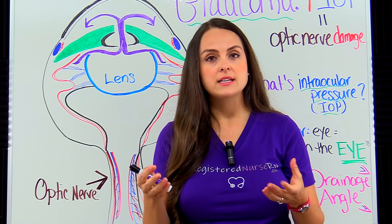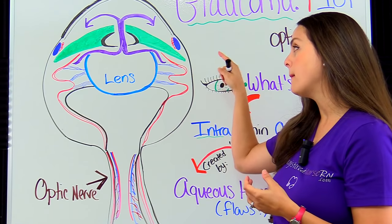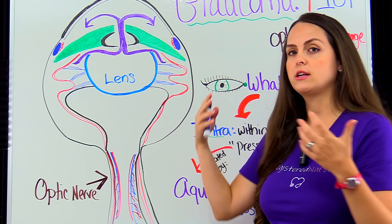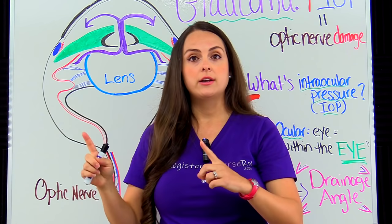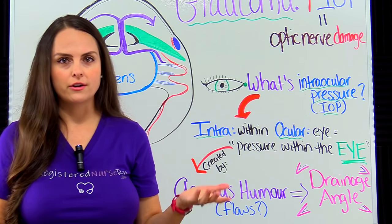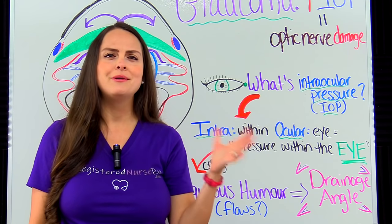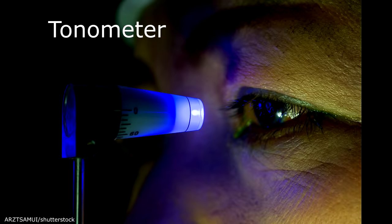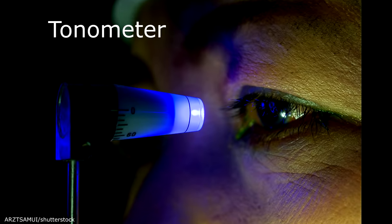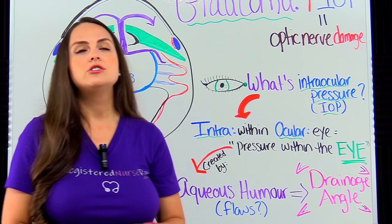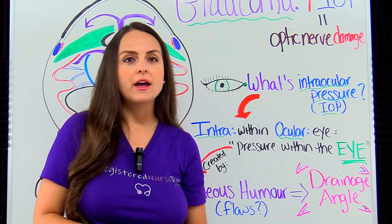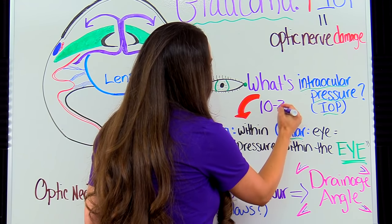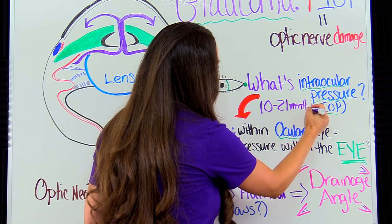Aqueous humor is produced in the eye, specifically by the ciliary body. It drains out through the trabecular meshwork into the drainage canals. If your production rate and your drainage rate are not equal, you're going to get increased intraocular pressure. IOP can be detected through an eye exam using a device called a tonometer, which tells us what the patient's IOP is. Generally, a normal IOP in most people is about 10 to 21 millimeters of mercury.